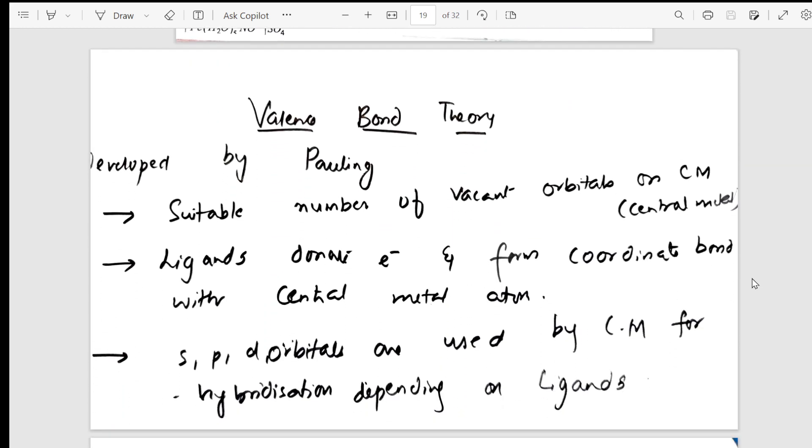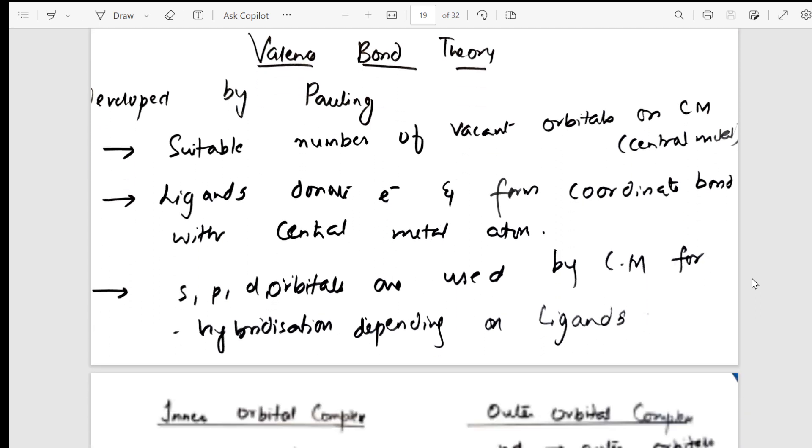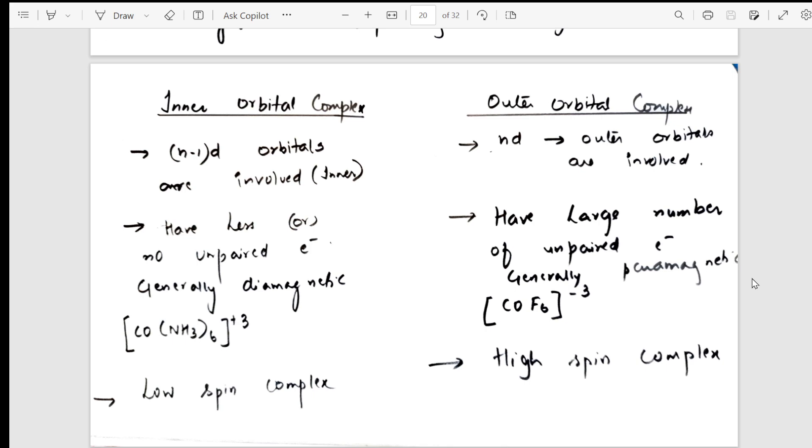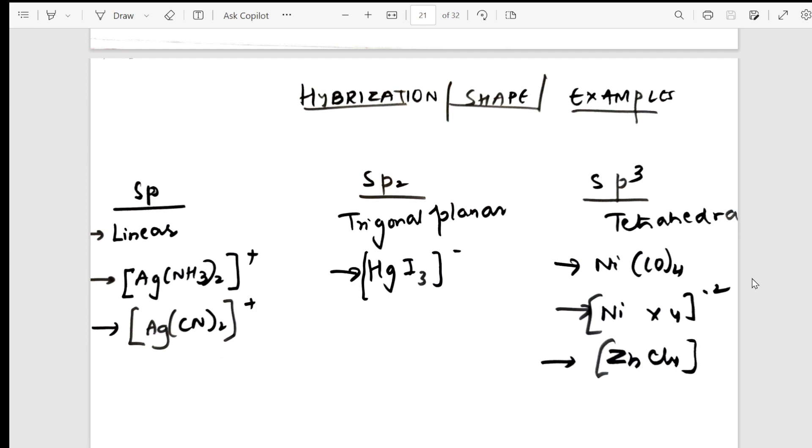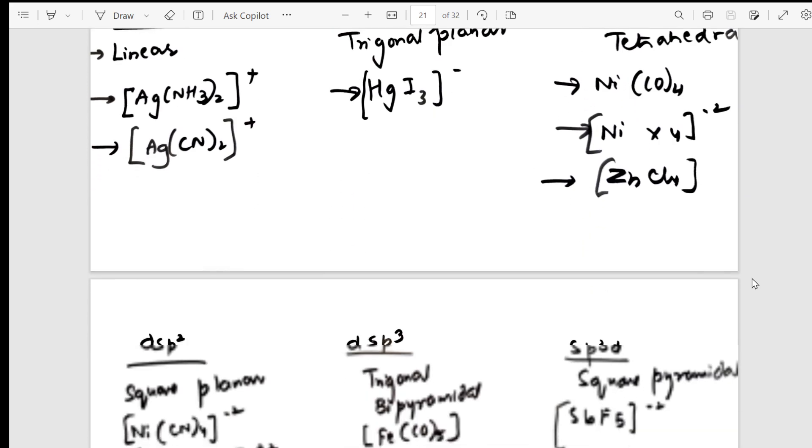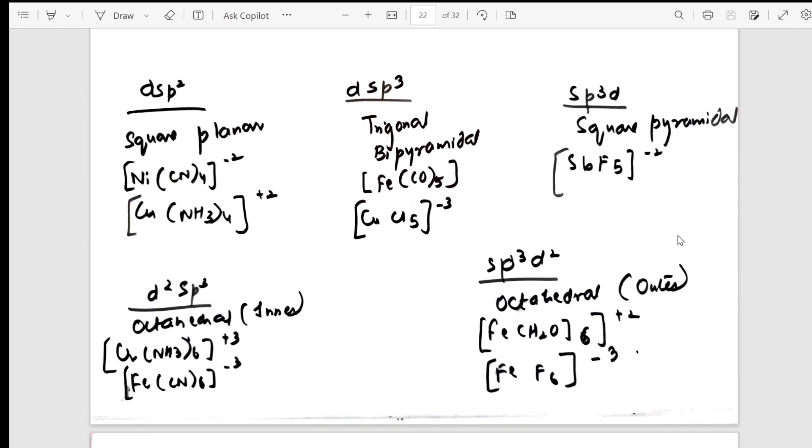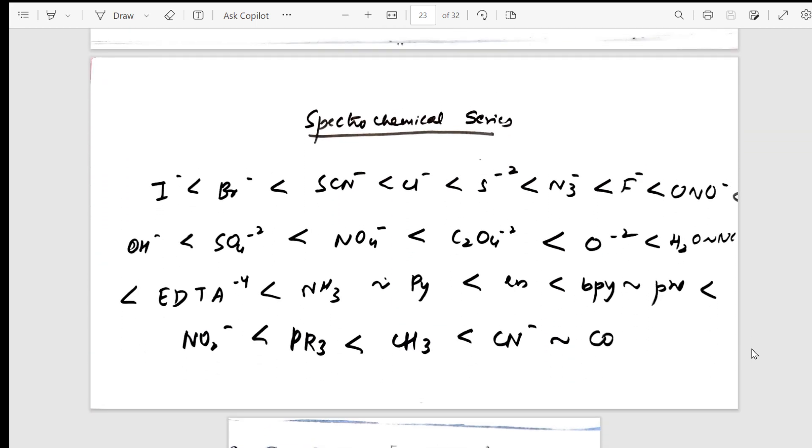Then I've gone to VBT, valence bond theory. Postulates in this, inner orbital complexes, outer orbital complexes with examples. Then hybridization - sp, sp2, sp3 with examples, dsp2, sp3d, everything. All the examples I've covered with the name of the complex and the examples below. Again I request you to watch the one shot videos for detailed explanation. Then explained about spectrochemical series here.